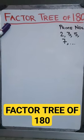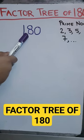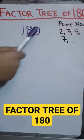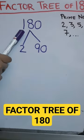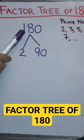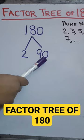Factor tree of 180. The smallest prime number that divides 180 is 2, and 180 divided by 2 is 90.